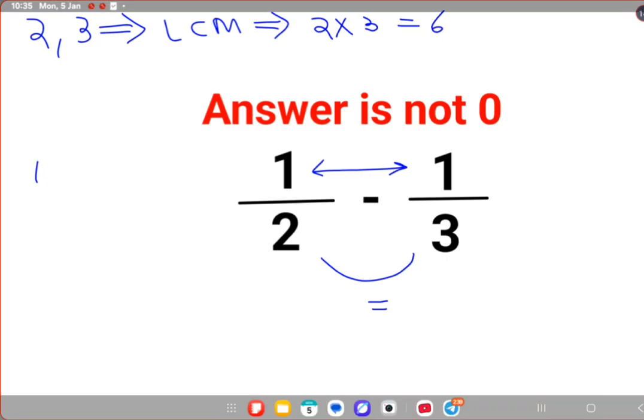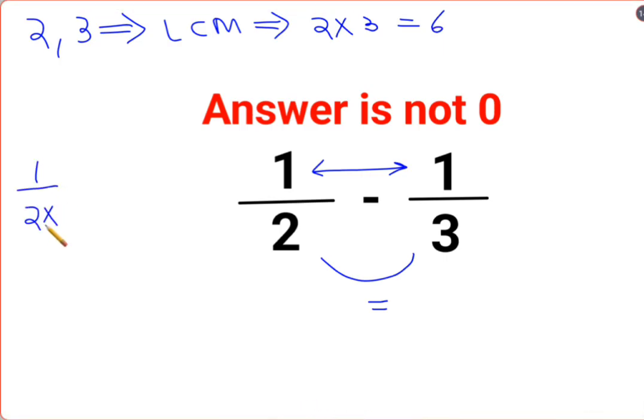So I need to convert this 2 in terms of 6. I need to multiply this with 3. Similarly, 1 also gets multiplied by 3.